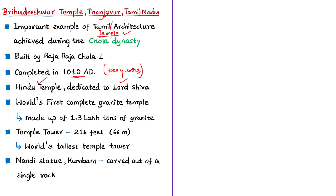As per the Press Information Bureau of the central government, this temple is the world's first granite temple, most famous for its unique architecture style. The temple is said to be made up of about 1.3 lakh tons of granite, yet no granite quarry is present within a 100-kilometre radius of this temple. Historians are surprised at where the massive granite was brought from, making Raja Raja Chola I famous for the effort.